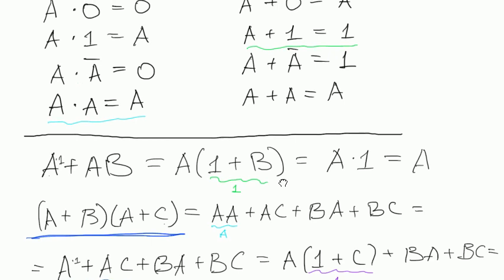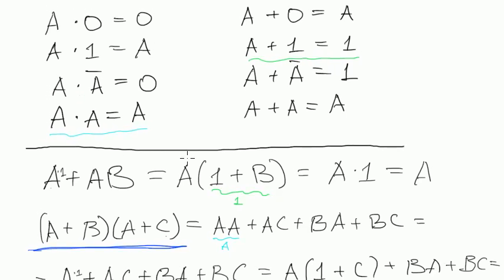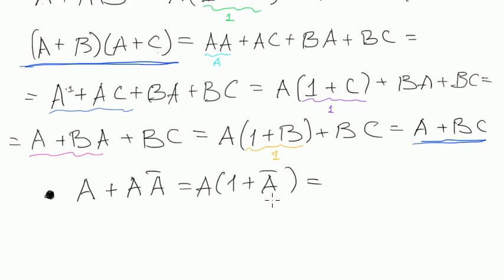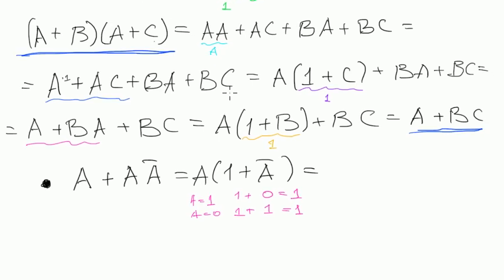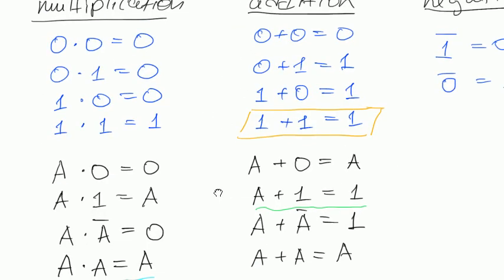Then of course we know that something plus 1 will always be 1. But does it work with negated values? We can check that if you're not sure. We can put instead of A, if A equals 1, then A negated will equal 0, and then 1 plus 0 will equal 1. And if A equals 0, then A negated will equal 1, and 1 plus 1 equals 1. If sometimes you're just not sure if there is a negated value, how does this change things around? You just can check it with the rules above.